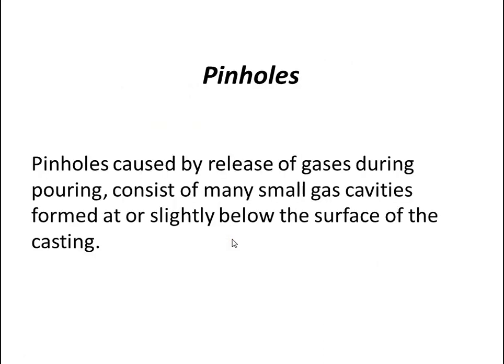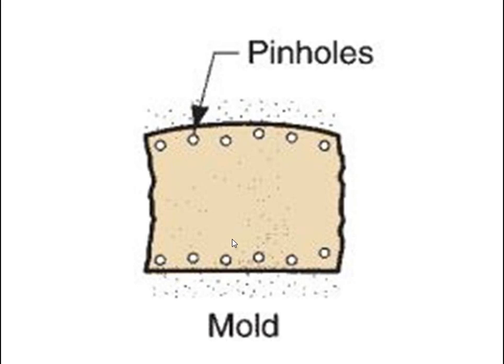The second defect is pin holes. Pin holes are caused by release of gases during pouring and consist of many small gas cavities formed at or slightly below the surface of the casting. There are some figures of pin holes.